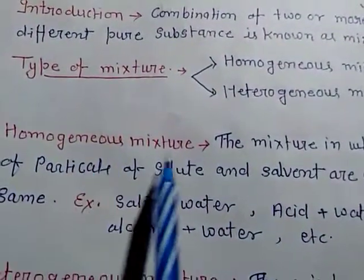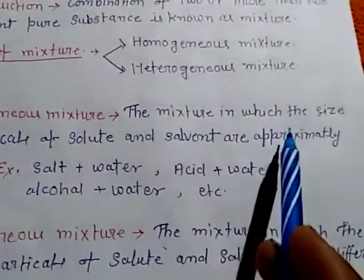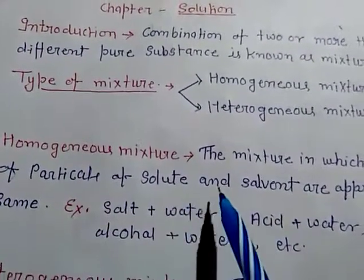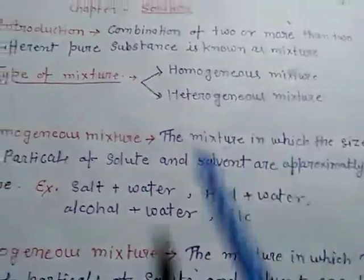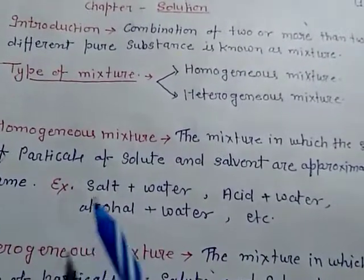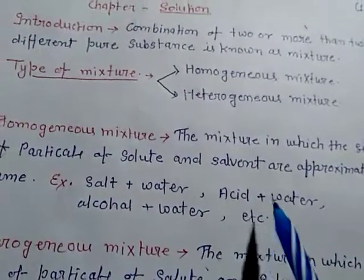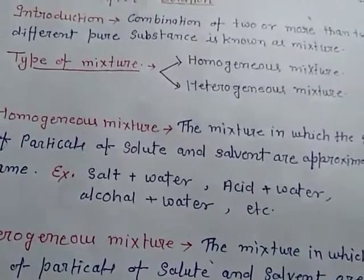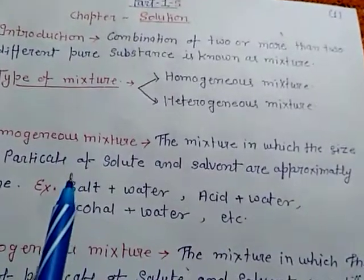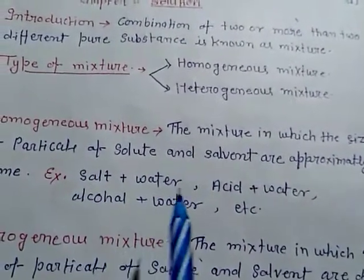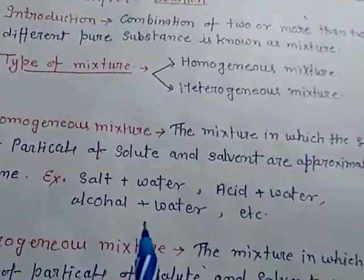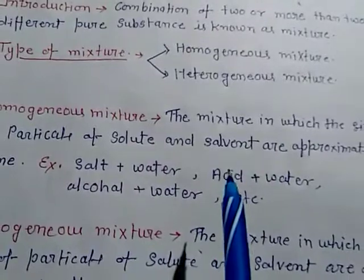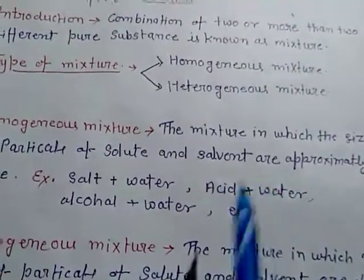Homogeneous mixture is the mixture in which the size of particles of solute and solvent are approximately the same. For example, salt plus water, acid plus water, alcohol plus water, etc. When we mix salt and water together, we can see that there are no visible particles — they are completely mixed and the solution is transparent.